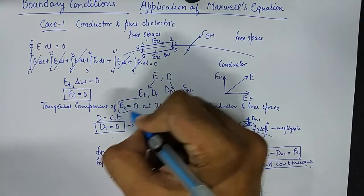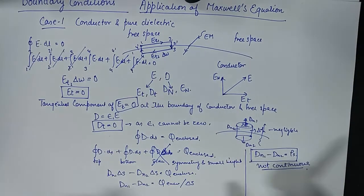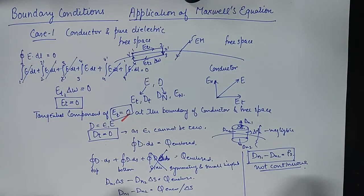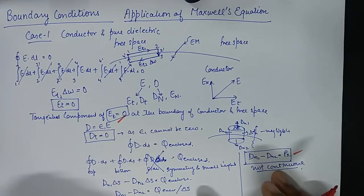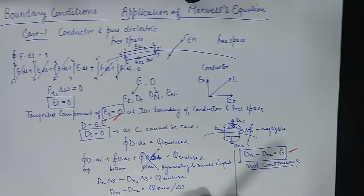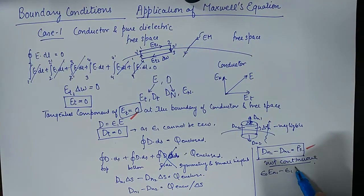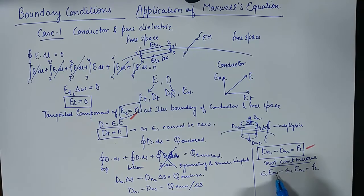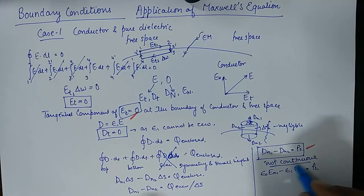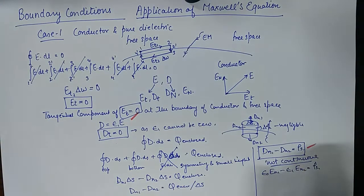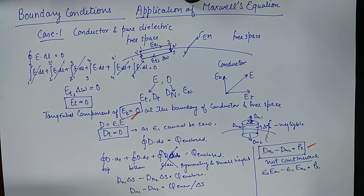So we've got two results. The first result is that the tangential component of electric field intensity comes out to be 0. The normal component DN1 minus DN2 equals rho-S. And if we find the normal component of electric field intensity by substituting D = ε·E, we get ε-naught·EN1 minus ε₁·EN2 equals rho-S, so EN1 upon EN2 is not equal to 1, meaning it is discontinuous. The tangential component turns out to be 0. These were the boundary conditions for the conductor and pure dielectric. I hope you liked this tutorial. I'll come up with the second case in the next video. Till then, take care. Bye.